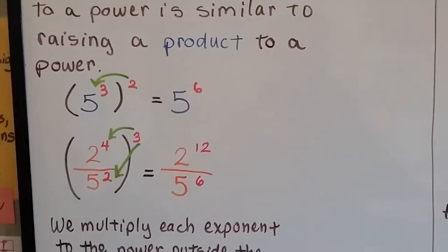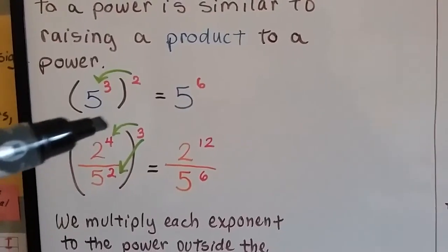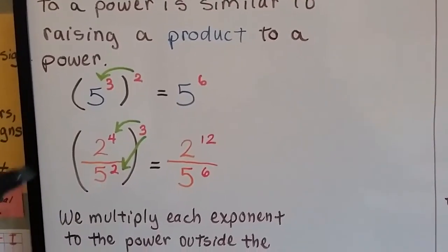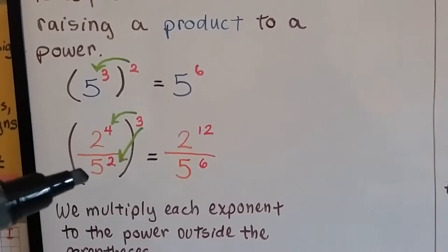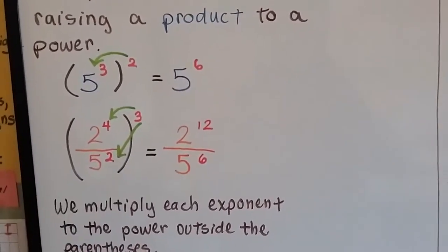Well, for a quotient, this little 3 exponent goes to both the numerator and the denominator. So we would have 2 to the twelfth power over 5 to the sixth power, see?